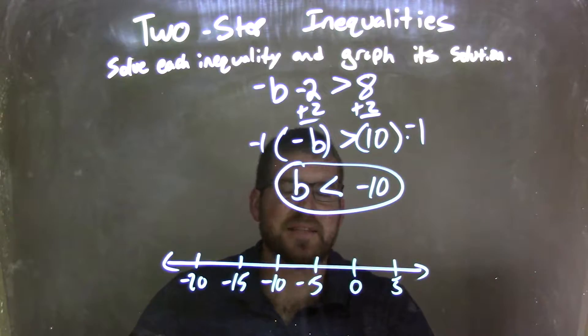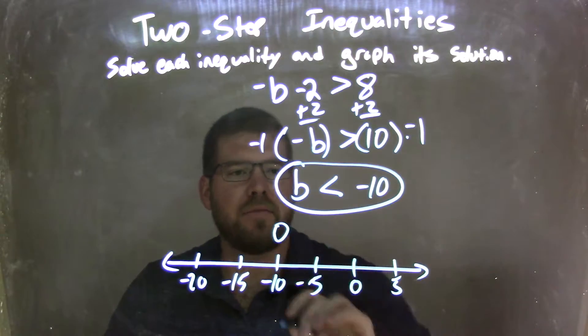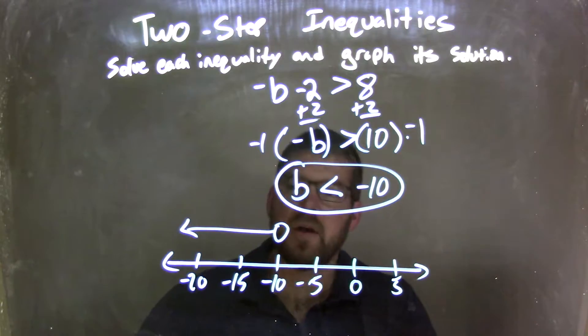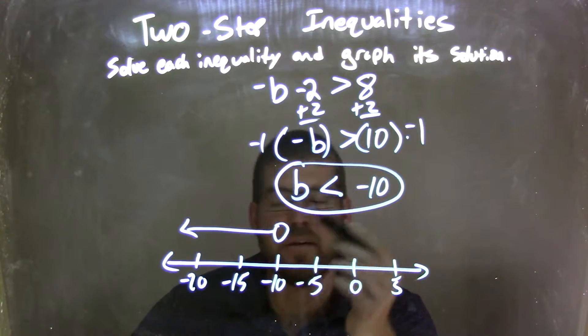Well, if b is less than negative 10, we have an open circle there because it's not equal to at negative 10. And if b is less than, we put our arrow to the left. And there we have it. We have a graph that matches our inequality, where b is less than negative 10.